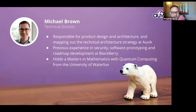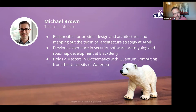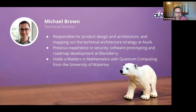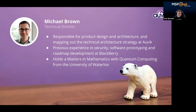I'm Michael Brown. I'm a technical director here at Avik. I've been with the company about seven years, seeing a lot of growth and changes in the way we handle things internally. My role right now is responsible for product design and architecture — mapping out the technical strategy and the evolution of our tech stack and building a culture of engineering excellence here at Avik. I've got lots of experience previously in security, software prototyping, and roadmap development at BlackBerry in Waterloo. I also have a master's in mathematics in quantum computing, which is something I'm trying to figure out how to work into my day-to-day life.